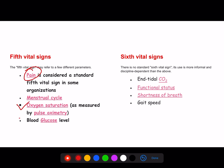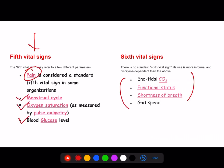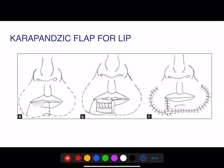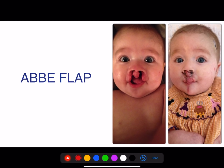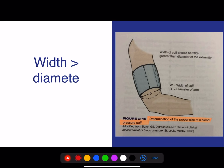You can also consider blood glucose level or menstrual cycle. The sixth vital sign includes all these additional parameters. Regarding flaps: there is a specific flap type useful for the lip reconstruction, and the commandos operation is used to treat infiltrated mandible or floor of the mouth — removing part of the tongue, floor of the mouth, hemimandibulectomy, and total block dissection.